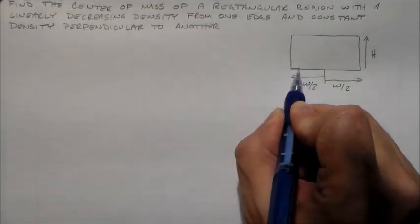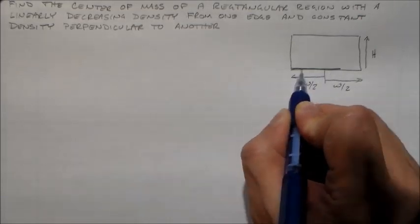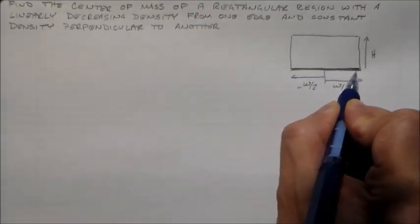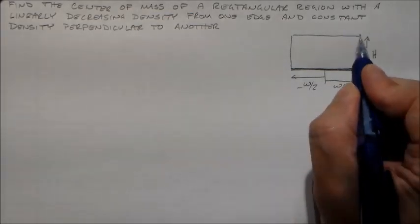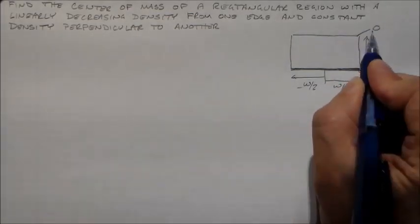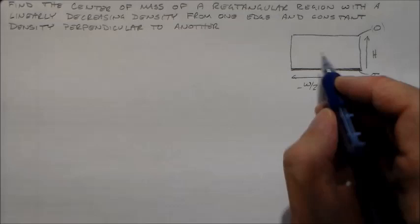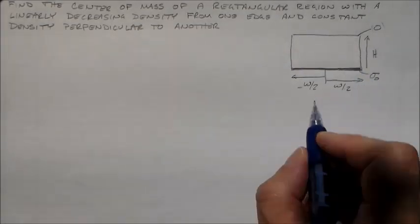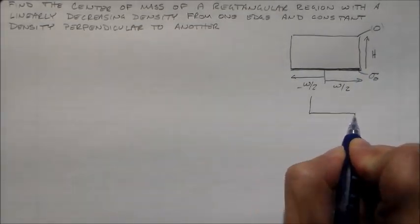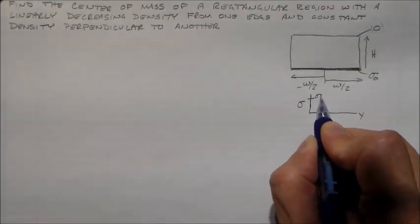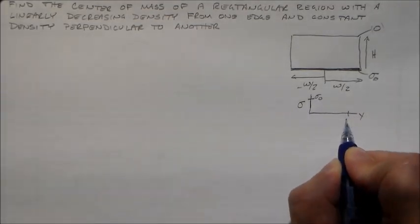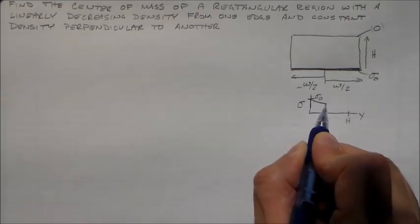So it's got some rectangular region there and it's got some variable density. The variable density will be maximum right here, we'll use sigma naught. I'm going to just let this go to zero here, I meant to write zero. So it's going to linearly, as a function of y, sigma will linearly decrease from sigma naught to zero at h.